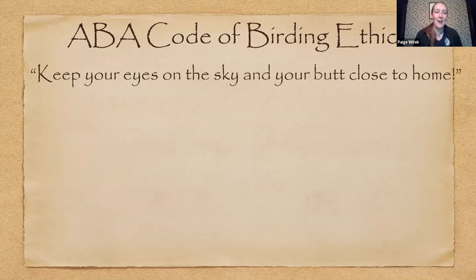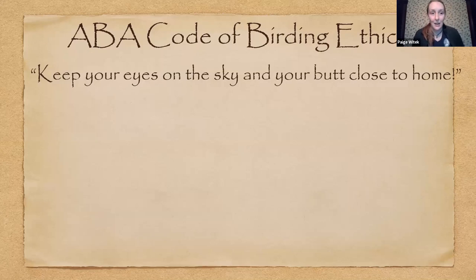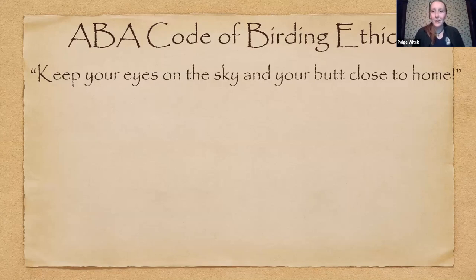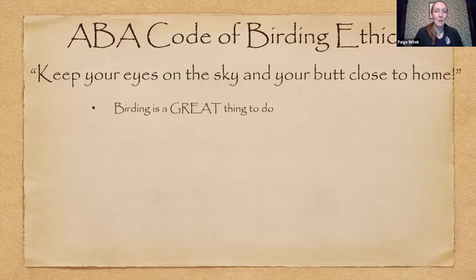The last thing to briefly cover: the American Birding Association has a code of ethics for birders to follow, benefiting both the birds and other birders in your area. They also gave specific ethical guidance for COVID-19 and maintaining social distancing — titled 'Keep your eyes on the sky, but your butt close to home.' The key points: maintain social distancing guidelines while birding, stay as close to home as possible to reduce potential to require emergency services, and use your best judgment. The main message is to bird as much as you're able while not exposing yourself or anyone else to risk.